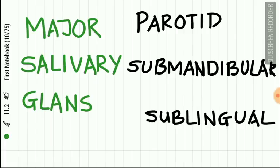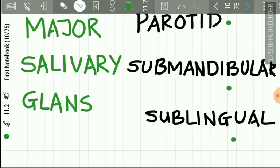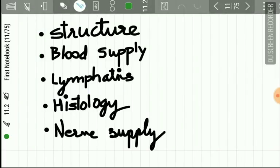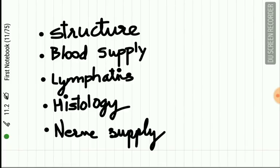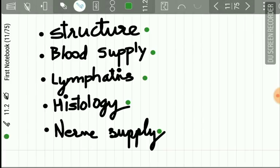The three major salivary glands are the parotid, submandibular, and sublingual glands. We will study each gland under the following headings: structure, blood supply, lymphatic supply, nerve supply, and histology.